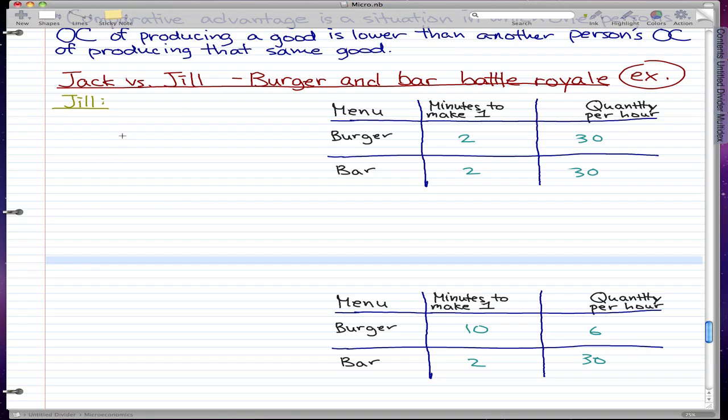This video will focus on Jack versus Jill's burger and bar battle. We're gonna start off with Jill. For Jill, here's the information we're gonna look at. In one hour, Jill can make 30 burgers or 30 bars.